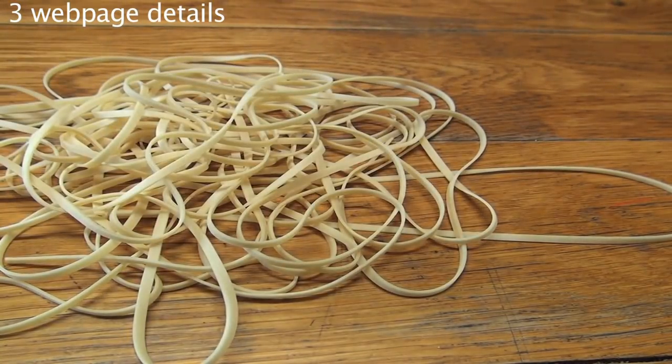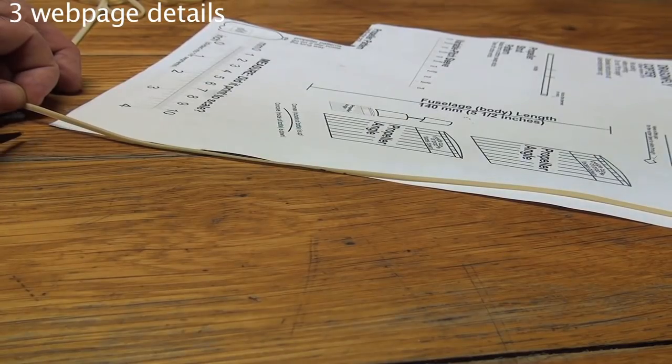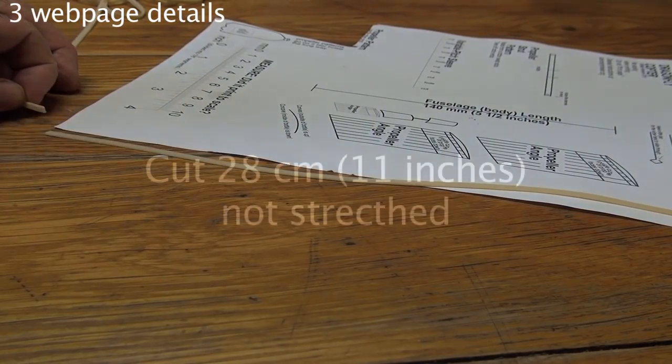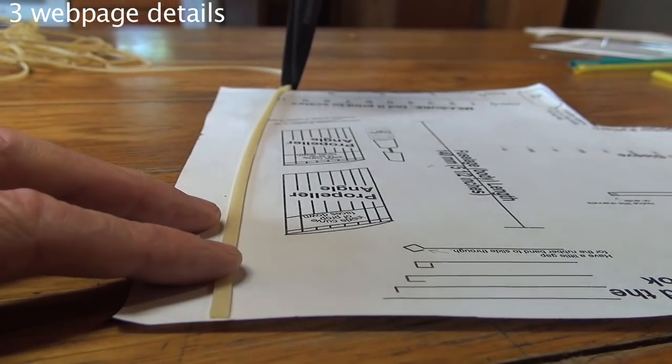This is the mother of all rubber bands. From one end, cut a piece 28 centimeters, which happens to be the length of North American printer paper.